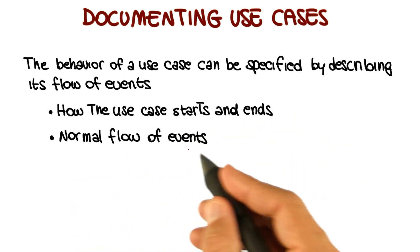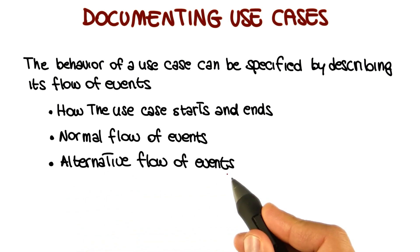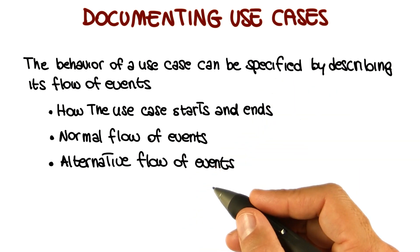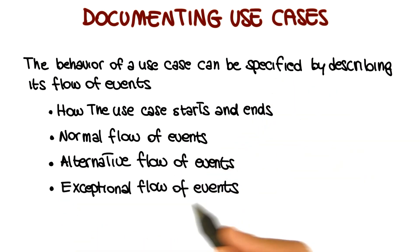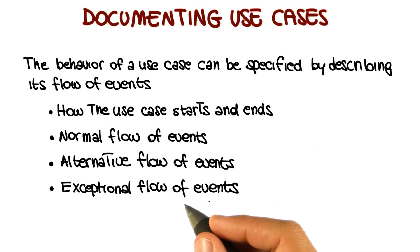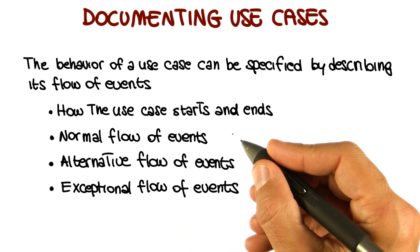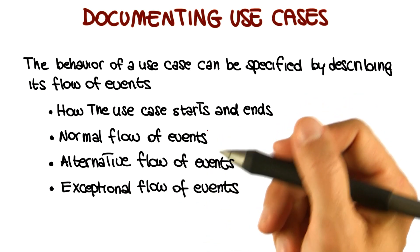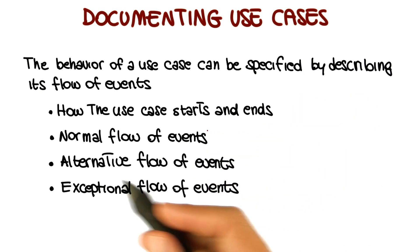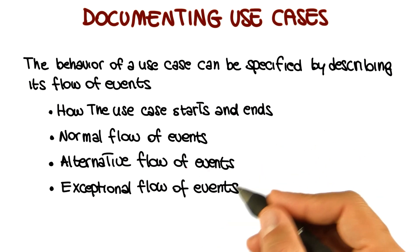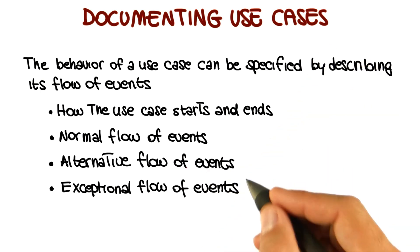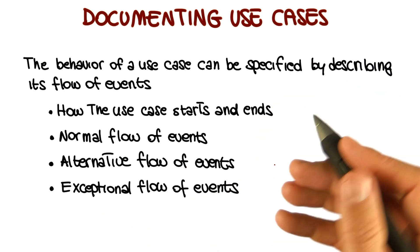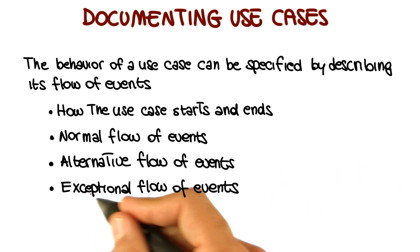In addition to the normal flow of events, it should also describe alternative flows of events — for example, in cases where there are multiple ways of accomplishing one action. It should also describe exceptional flows of events. For example, when describing a use case for withdrawing money from an ATM: the normal flow involves inserting your card and providing your PIN; an alternative flow might include first checking your account balance before withdrawing cash; and an exceptional flow describes getting your PIN wrong and therefore being unable to perform the operation.